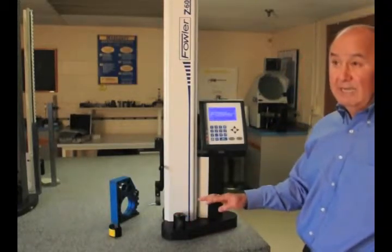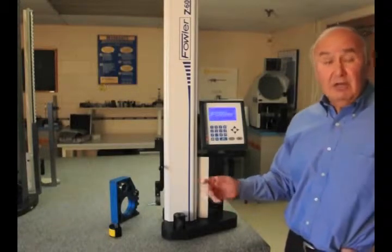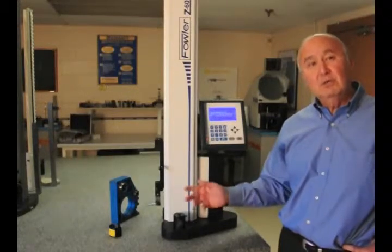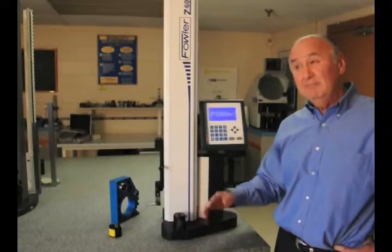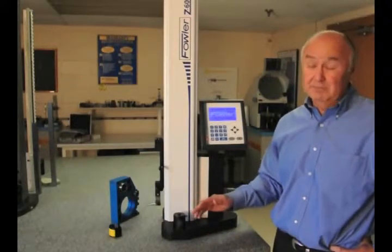It's a 1D gauge. It does all your basic measurements: IDs, ODs, centerlines, heights, widths, depths, slots. Basically, 80 to 85 percent of everything a CMM will do.